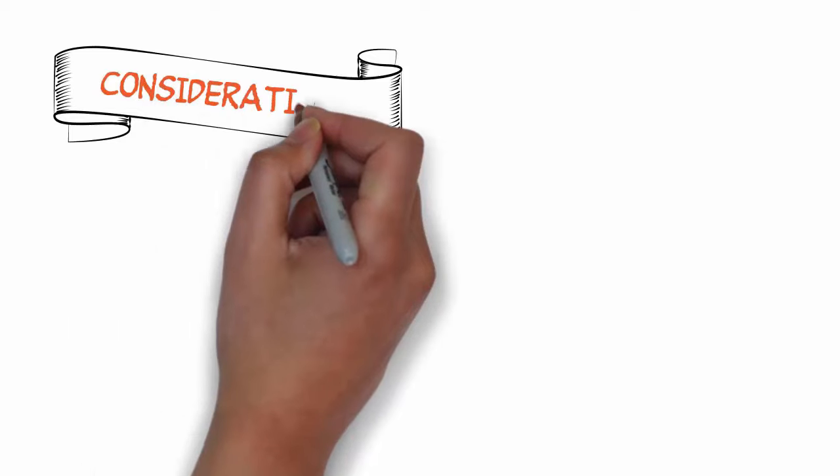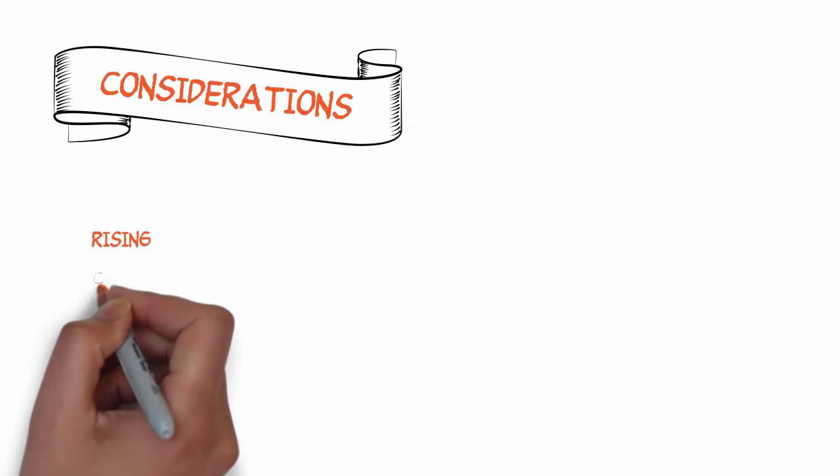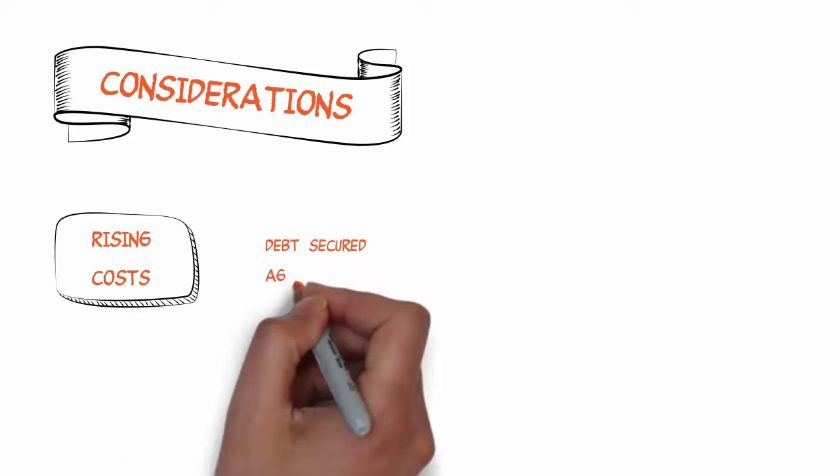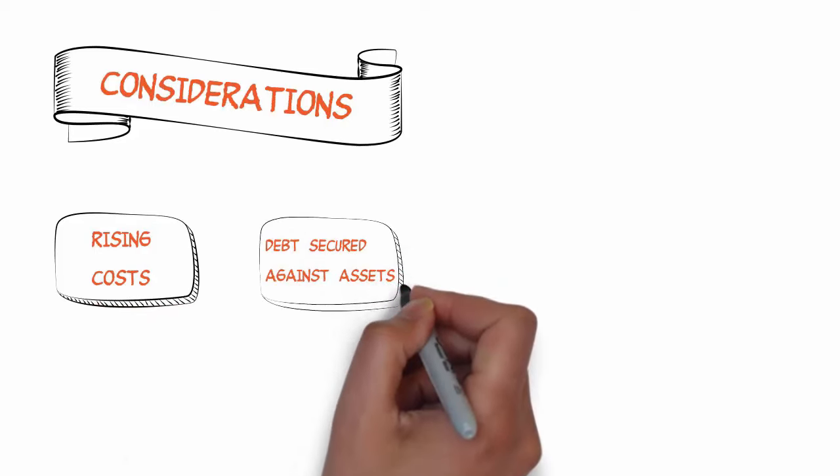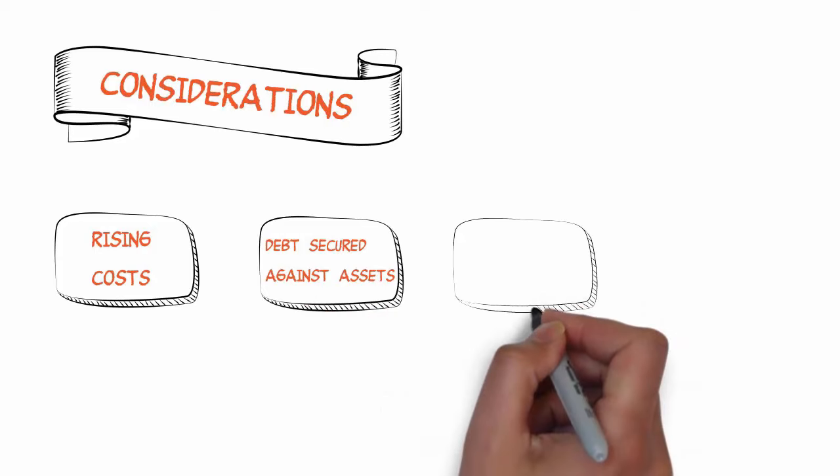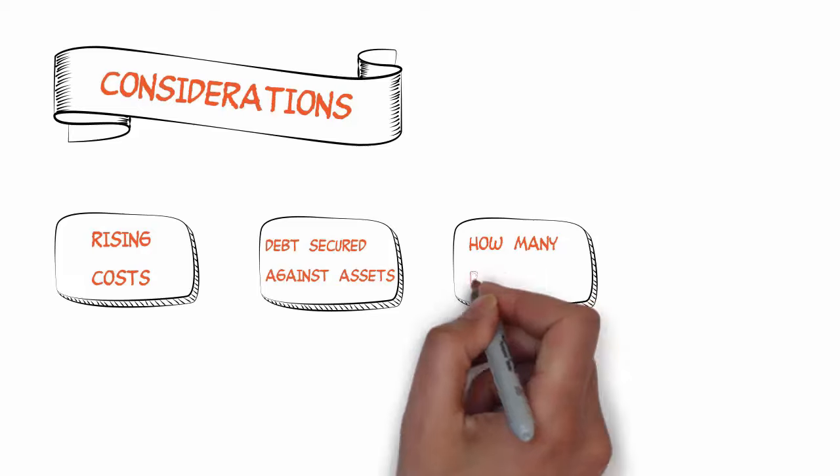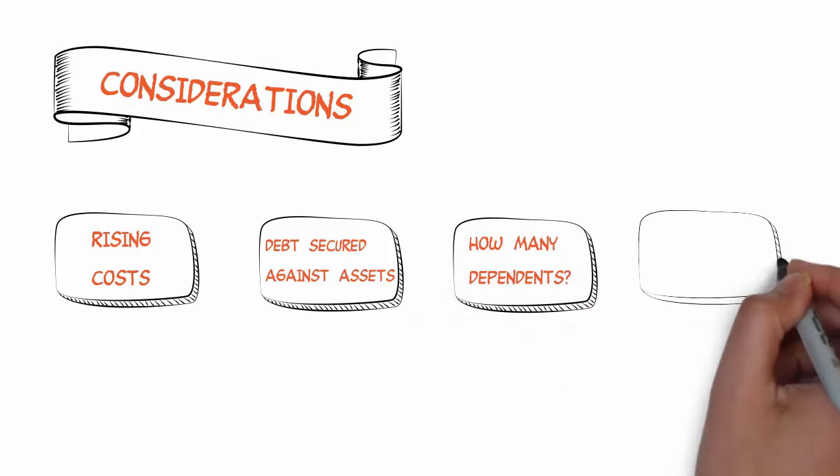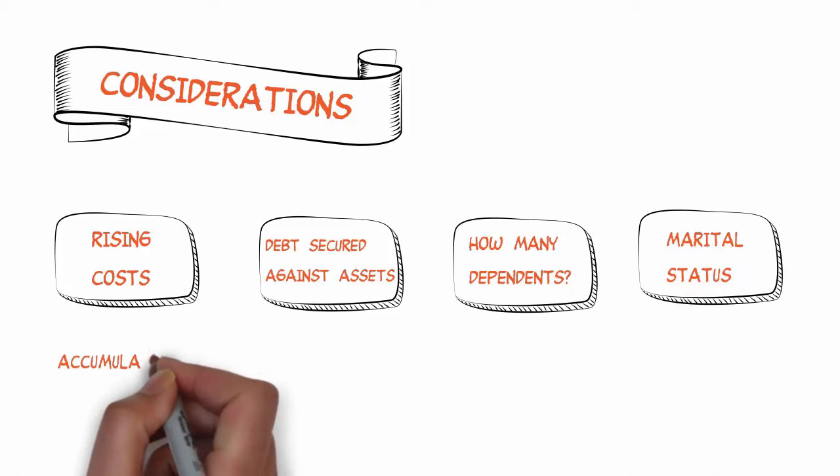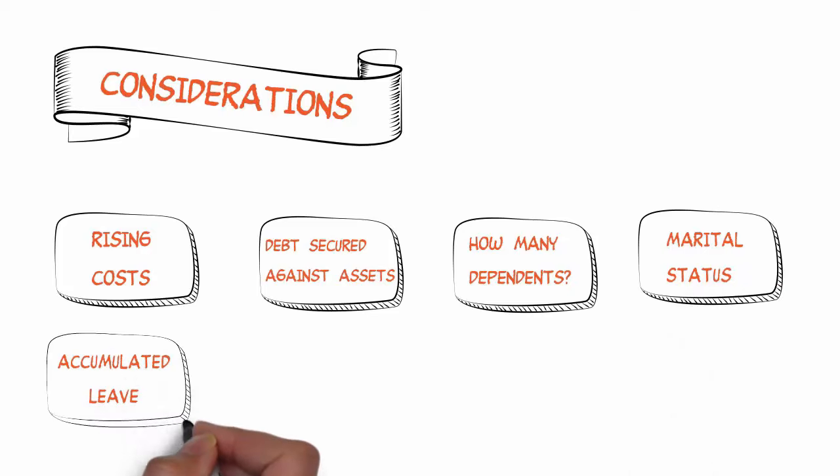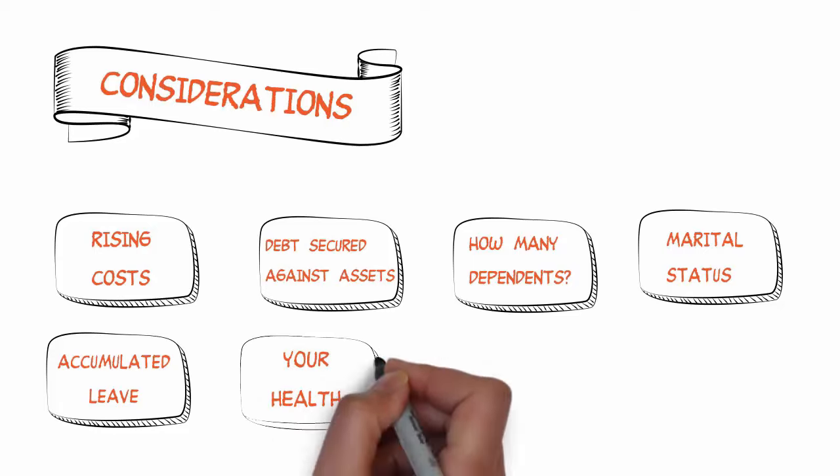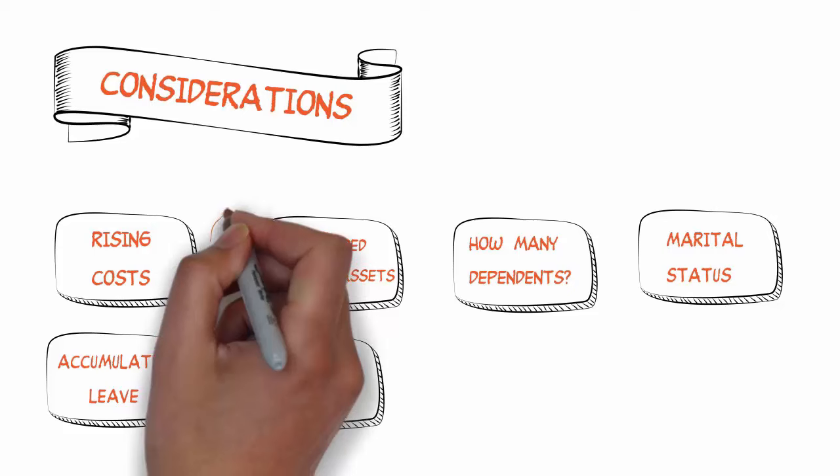Make sure you consider issues such as the rising costs of rebuilding your home and replacing lost assets, debts secured against assets such as mortgages and investment loans, providing for people who are dependent upon you. If the number of your dependents has reduced, you may have more insurance cover than you need. A change in marital status, accumulated leave from your job such as sick leave, long service leave and annual leave, your health and those of your dependents.